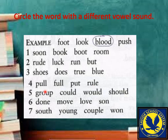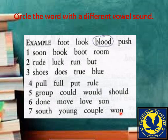Group, could, would, should — then: done, move, love, son — then: south, young, couple, one۔ ان words میں سے آپ نے point out کرنا ہے کہ کون سا word different ہے — وہ different word اور اس کا number اپنے comments section میں لکھیے گا۔